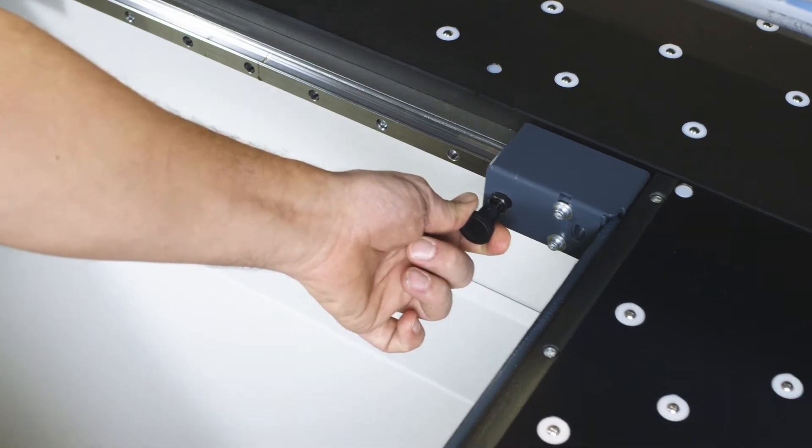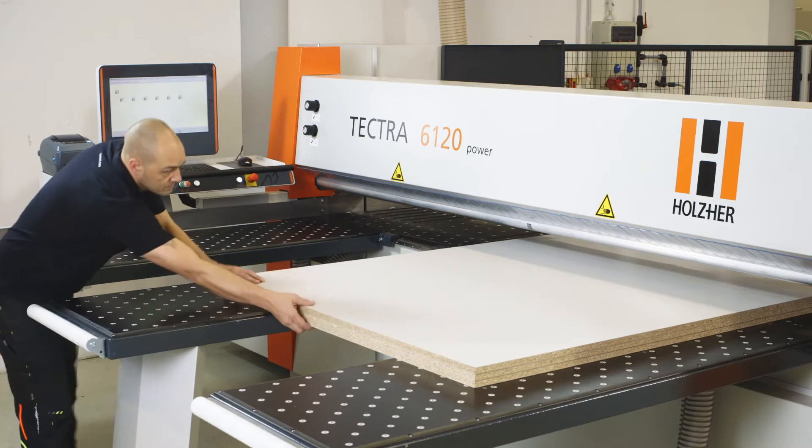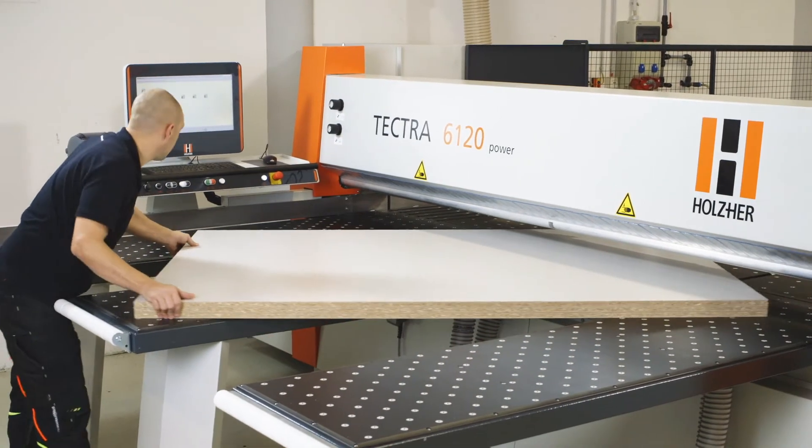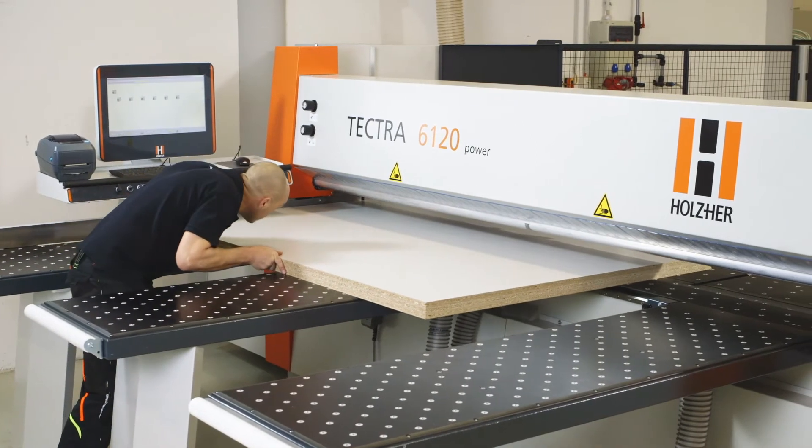The air cushion tables can be adjusted on the mobile version easily to the material dimensions and height of the operator. In front and back of the saw line, an air cushion allows the workpieces to be moved effortlessly without damage.